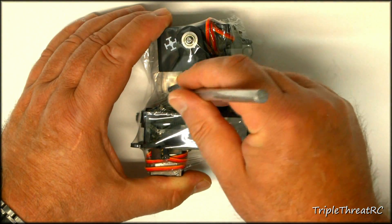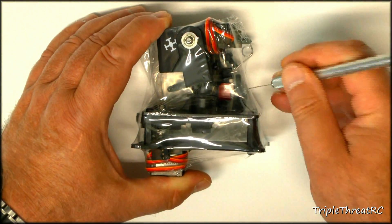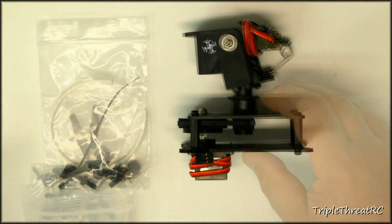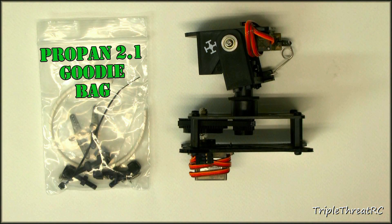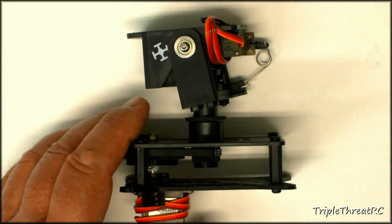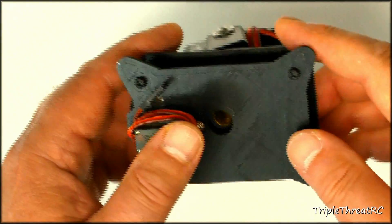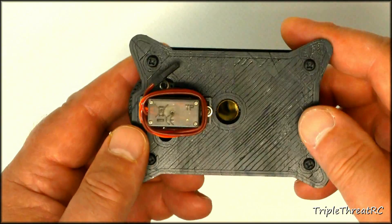The guys over at FPV Gadgets don't fool around, so the unit comes double boxed, bubble wrapped, and now they're even shrink-wrapping them to make sure that by the time they get to your door they're in perfect condition. Aside from the pan and tilt unit itself, you get a little goodie bag that's got some very useful parts in it that we'll cover off a little bit later.